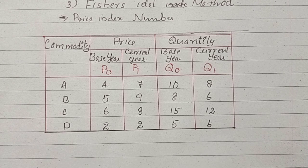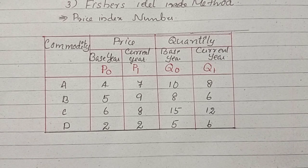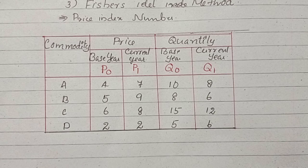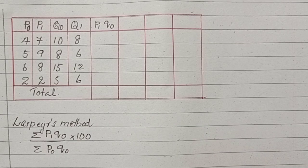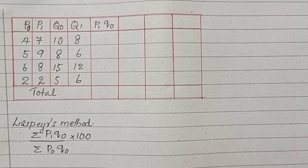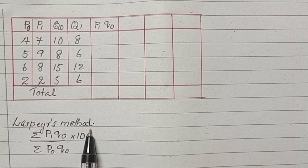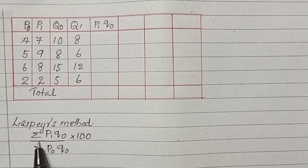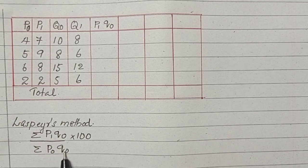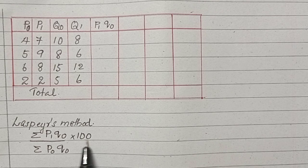Now I plotted P0, P1, Q0, and Q1. First, we are going to find index number of the price using Laspeyres Method. In this method, the formula is sigma P1 Q0 divided by P0 Q0 into 100.